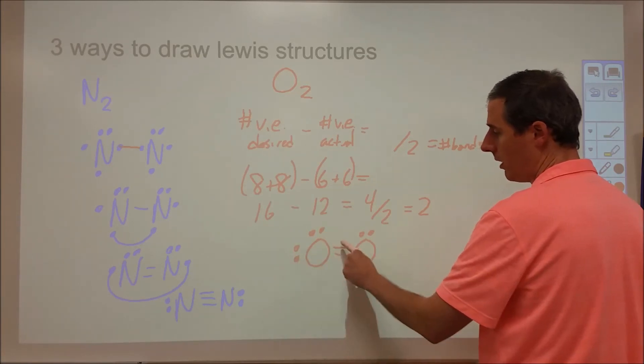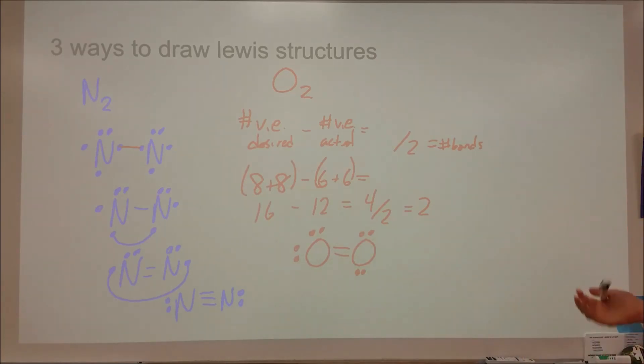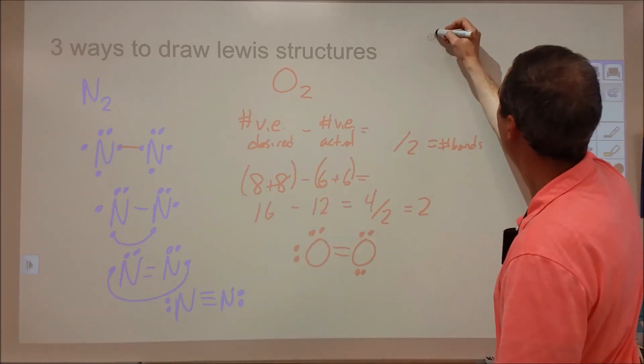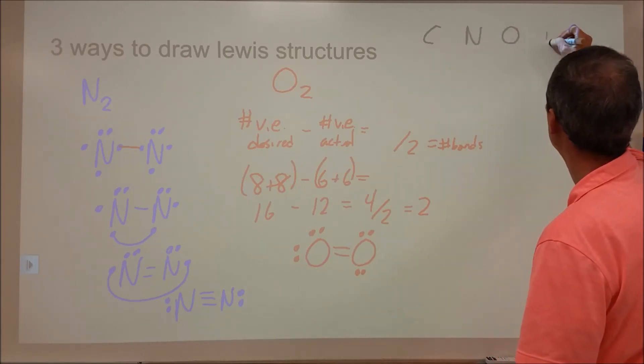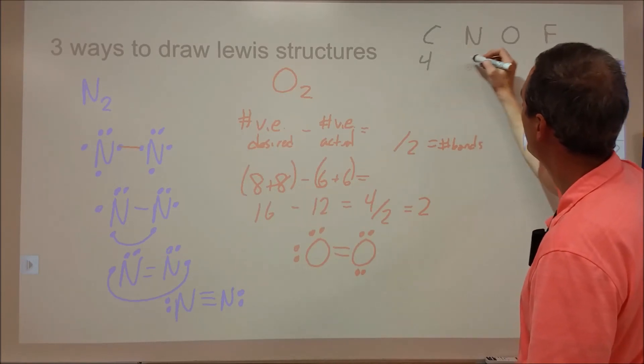But they're divvied up in a way where if we count the shared electrons towards both, we get 2, 4, 6, 8, and 2, 4, 6, 8. So thus we've satisfied this octet arrangement by doing a mathematical structure. Now, another thing that you can do is you can just start to learn how things tend to form bonds. So carbon, nitrogen, oxygen, and fluorine, and all of the columns underneath.